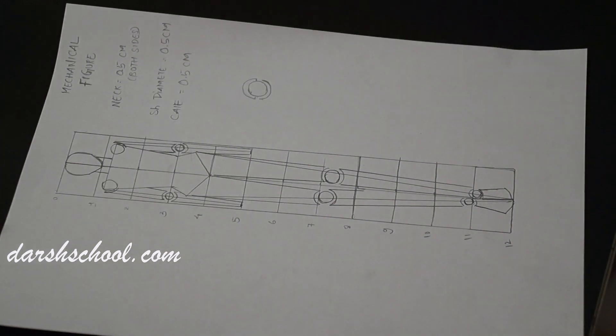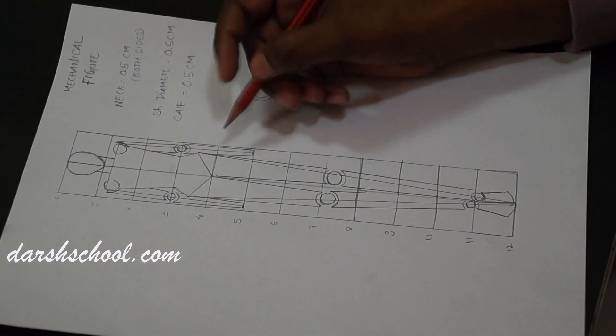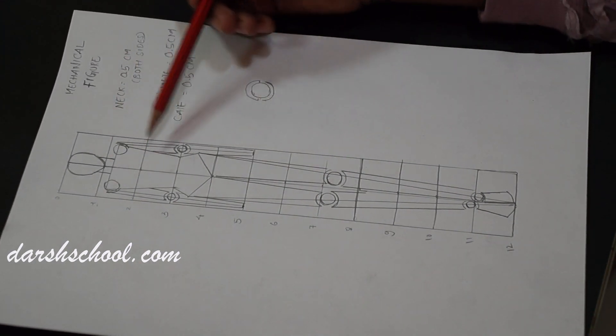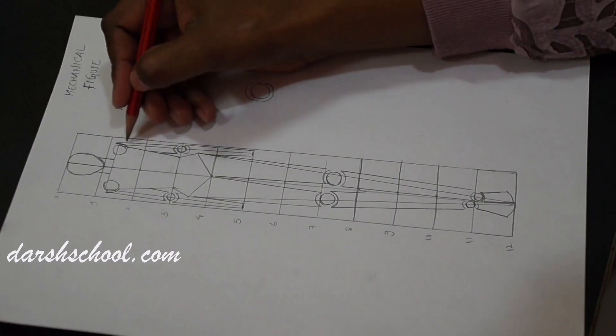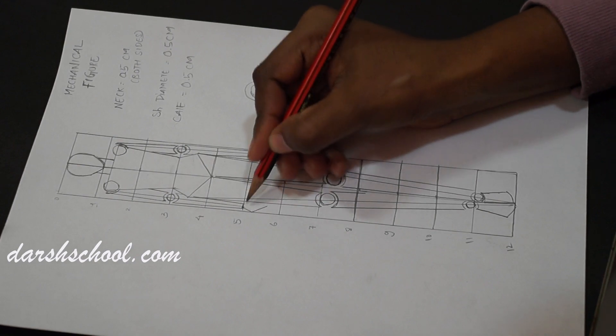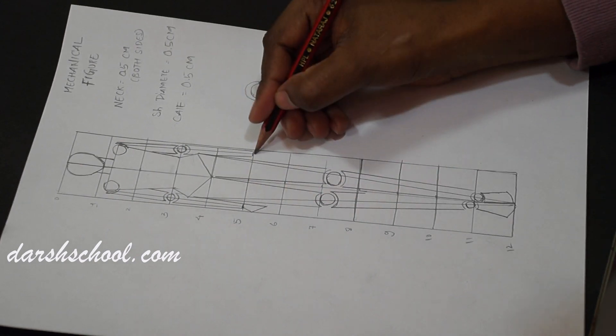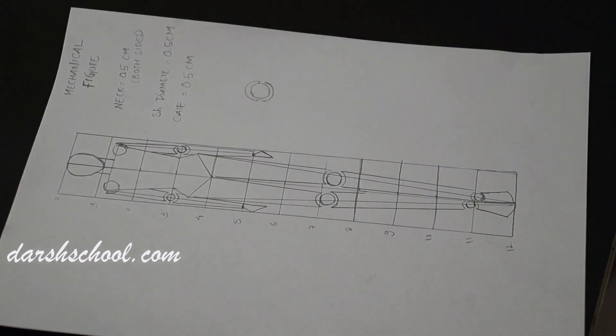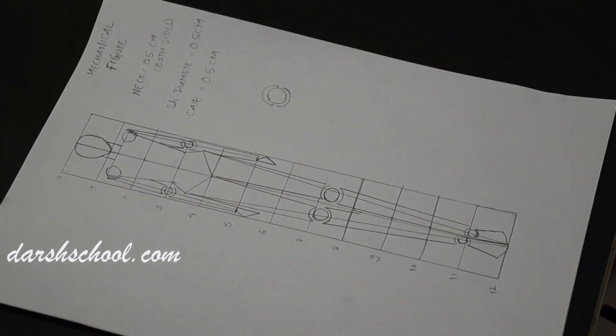So this is your mechanical. So now it is more clear to you that how the body takes shape. And draw your hands and that counts till 5.5. So this is your mechanical figure.